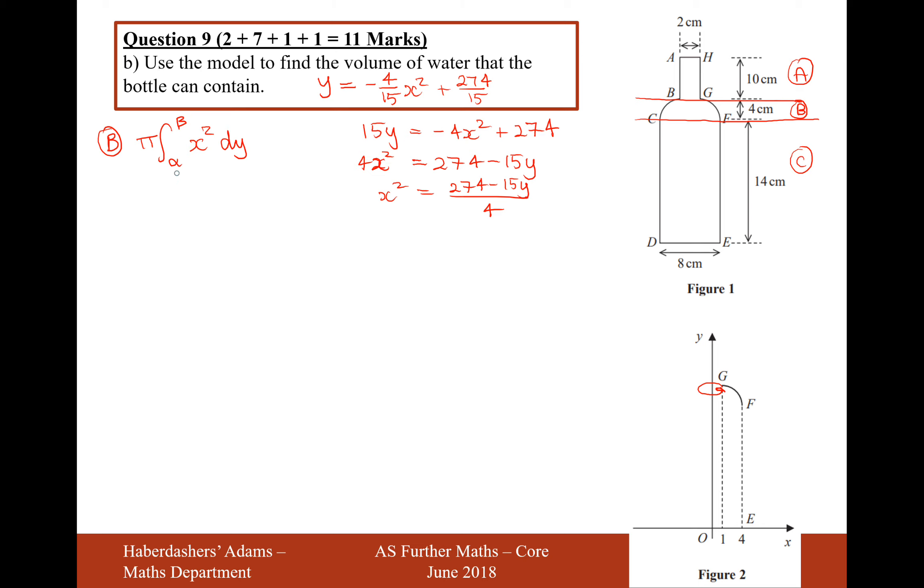And also remember that the boundaries on the alpha and the beta are going to be y boundaries. We're substituting a y value into a y variable, so it has to be a y on the boundaries there. So 14 and 18 we've worked out there. So it's going to be pi times the integral from 18 to 14 of, in fact, if we divide by 4 at the front, and then it's just going to be 274 minus 15y dy.